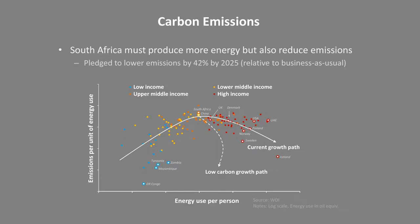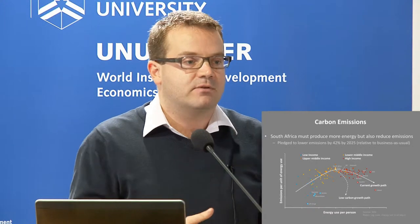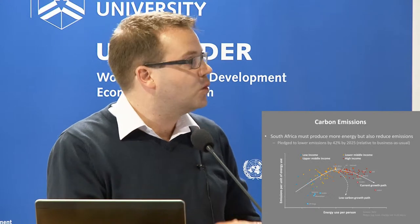You can see very clearly that emissions per unit of energy use — which is how dirty South Africa's energy is — places South Africa right at the top amongst all countries in the world as one of the dirtiest energy countries, and also a fairly high energy user per person. What I'm drawing from this graph is just to convey the challenges involved for South Africa to adopt a low-carbon growth path. It really requires South Africa not to follow the path that the rest of the developed world has followed — it has to sharply turn the corner.